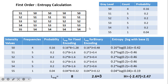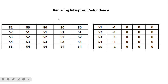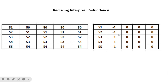To capture inter-pixel redundancy (second-order), we take the difference between adjacent pixels going row by row. The first pixel is kept as-is; subsequent pixels are replaced by the difference from the previous pixel — for example, 51-50 = 1, 50-50 = 0. After applying this transformation, the resultant image has many repeated values (mostly zeros and small differences), meaning randomness is reduced compared to the original image.